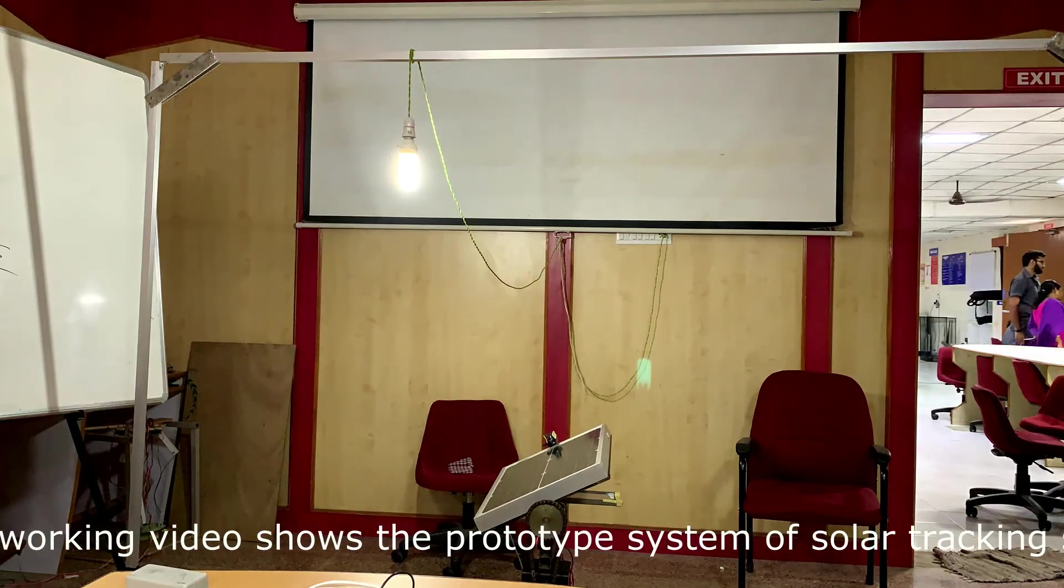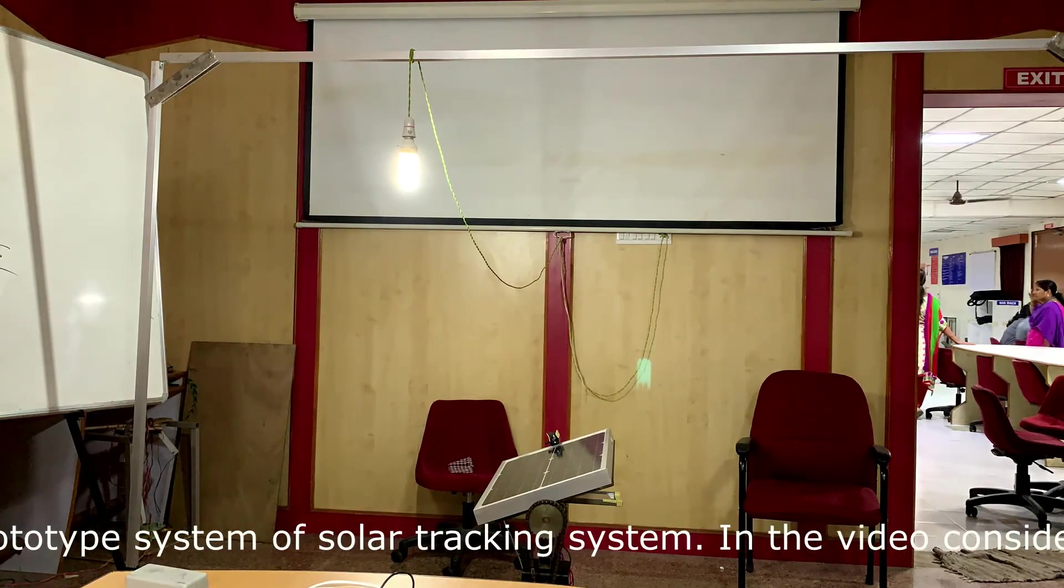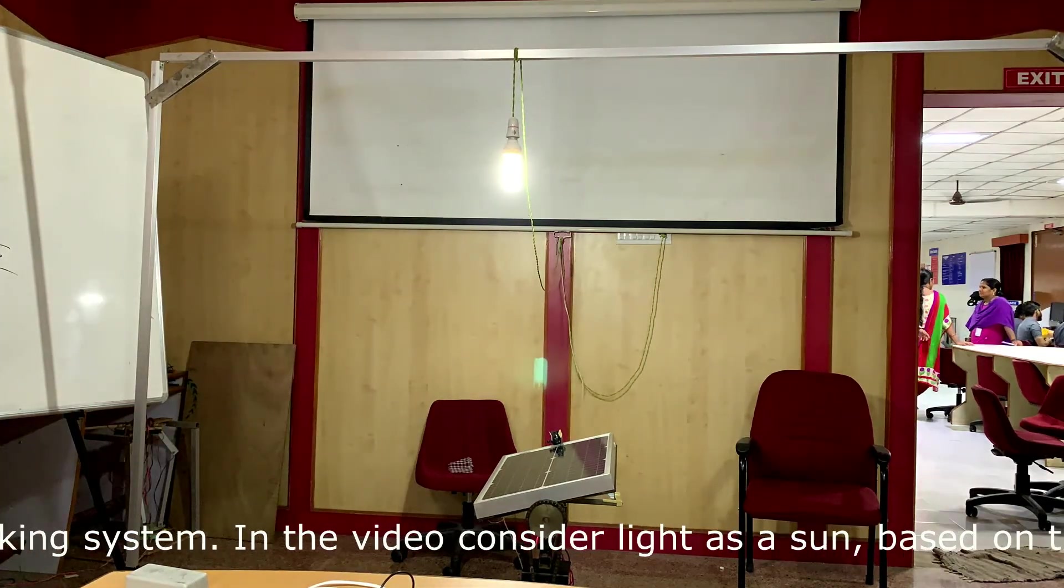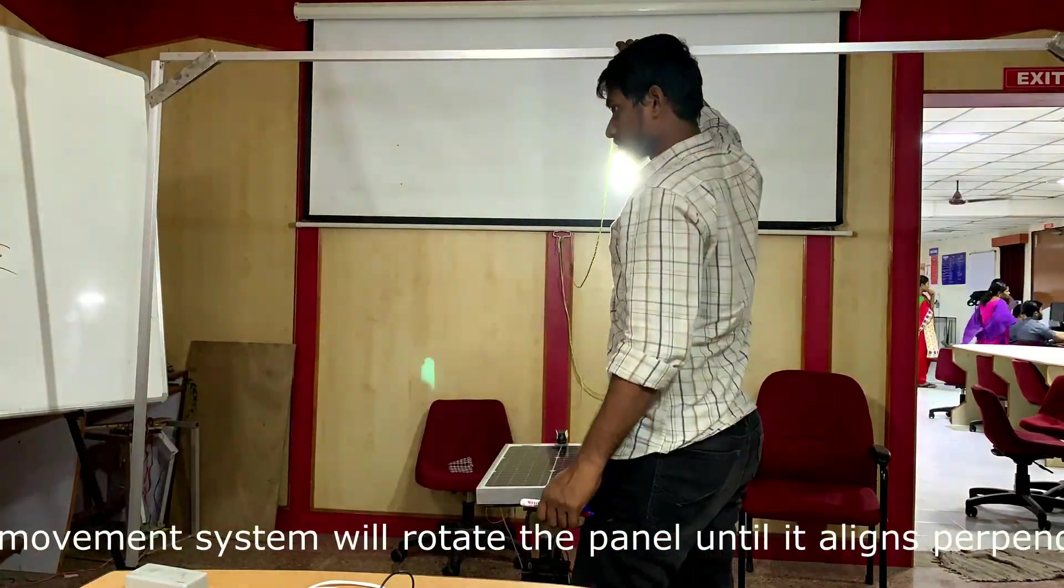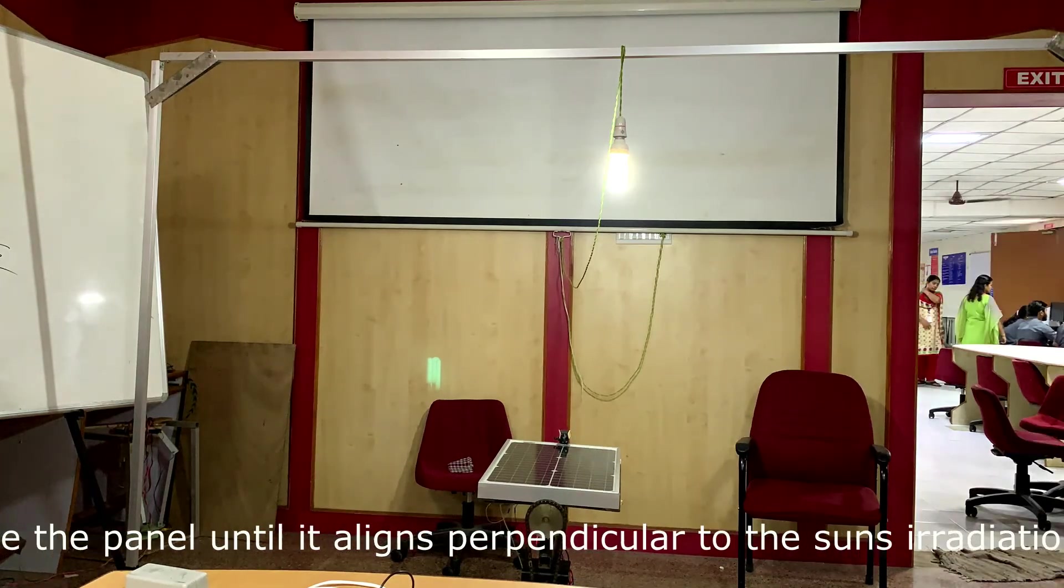In this system, accelerometer is mounted on the solar panel which is connected to the Arduino Uno to find out the tilt angle, as well as LDR is placed in the system which is used to reach the initial position when there is less light intensity.